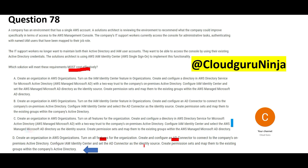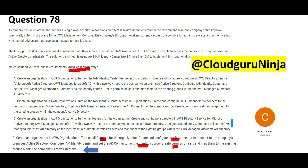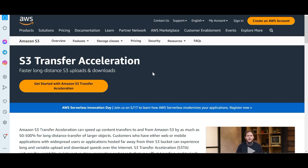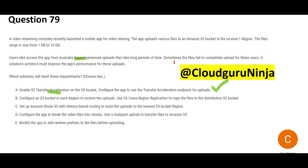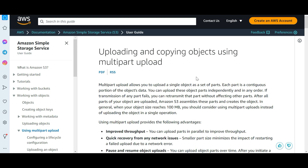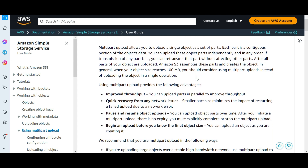The next question: you are trying to upload video files from Australia and it is slow — users are experiencing problems. To improve performance, first you should use Transfer Acceleration, because Australia is a long distance — for faster long-distance uploads, this must be used. Second, you should break the video files into parts so multipart upload can proceed in parallel. There is good documentation on multipart upload — you can pause and read it.